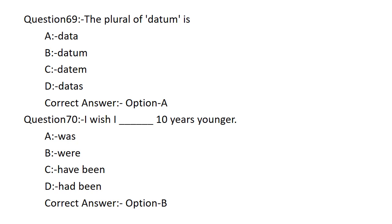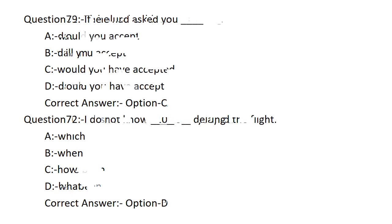I wish I dash ten years younger. Option A: WAS. Option B: WERE. Option C: HAVE BEEN. Option D: HAD BEEN. Option B is the correct answer — WERE. I wish I WERE ten years younger.